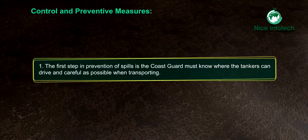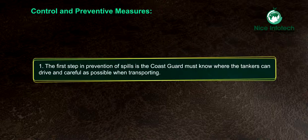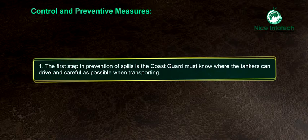Control and Preventive Measures. The first step in prevention of spills is that the coast guard must know where the tankers can drive, and be as careful as possible when transporting.